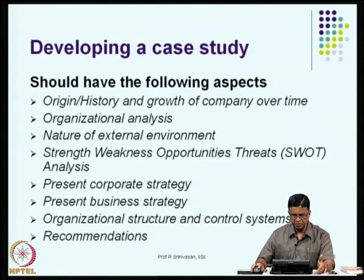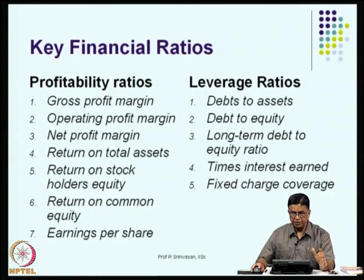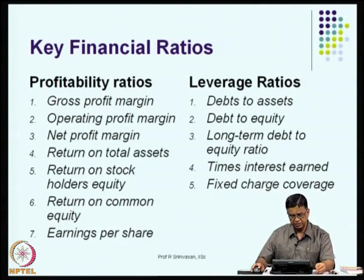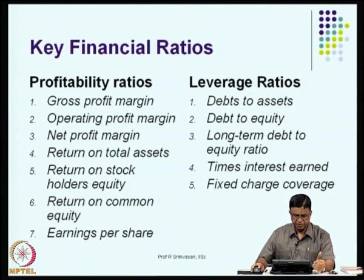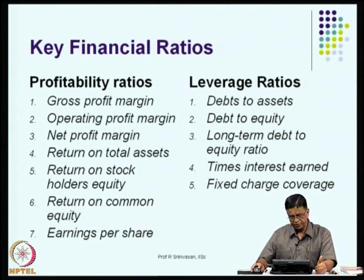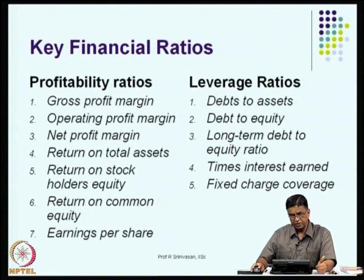We also looked at how one can develop a case study, going through the company. We looked at what are the key financial ratios we should consider — that is the profitability ratios. In that, we look at seven ratios: gross profit margin, operating profit margin, net profit margin, then return on total assets, return on stockholders' equity, then return on common equity, then earnings per share.